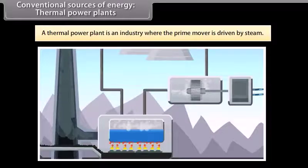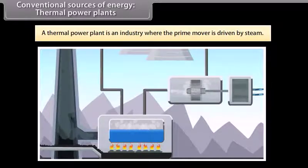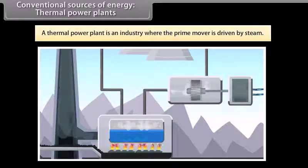Conventional sources of energy: Thermal power plants. A thermal power plant is an industry where energy is generated by steam. Here, water is heated and then it is turned into steam. This in turn spins a steam turbine driving an electrical generator. After it passes through the turbine, the steam is condensed in a condenser and recycled to where it was heated.